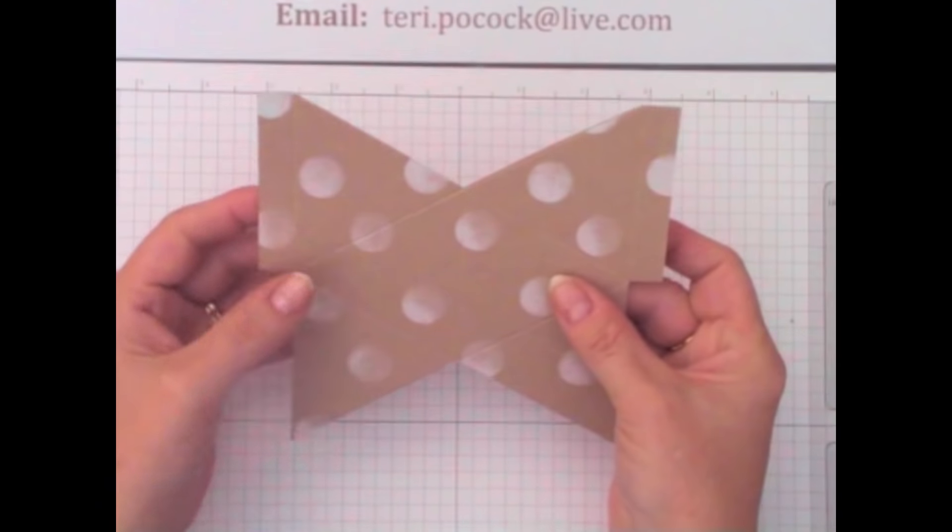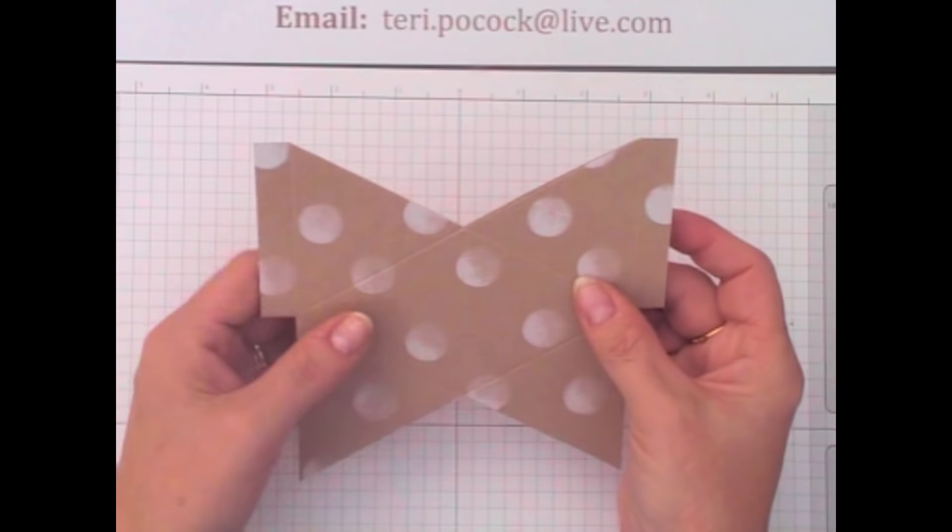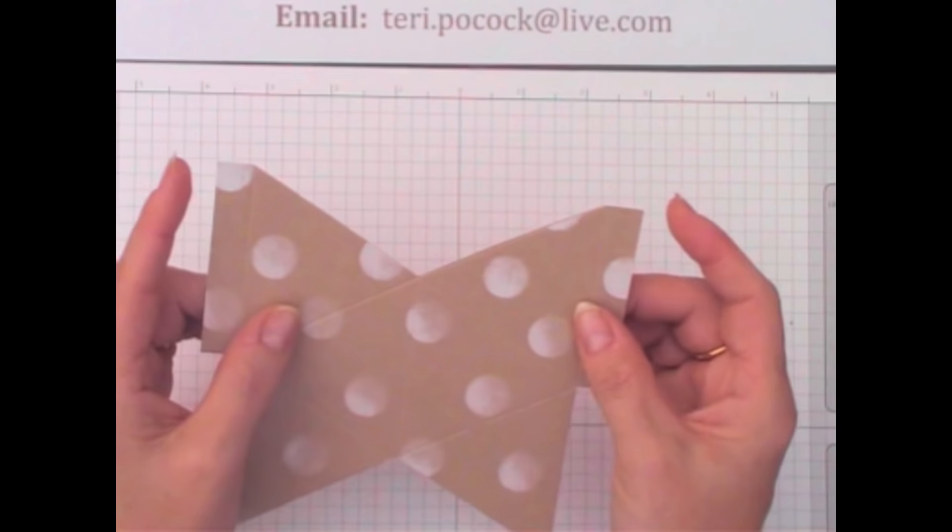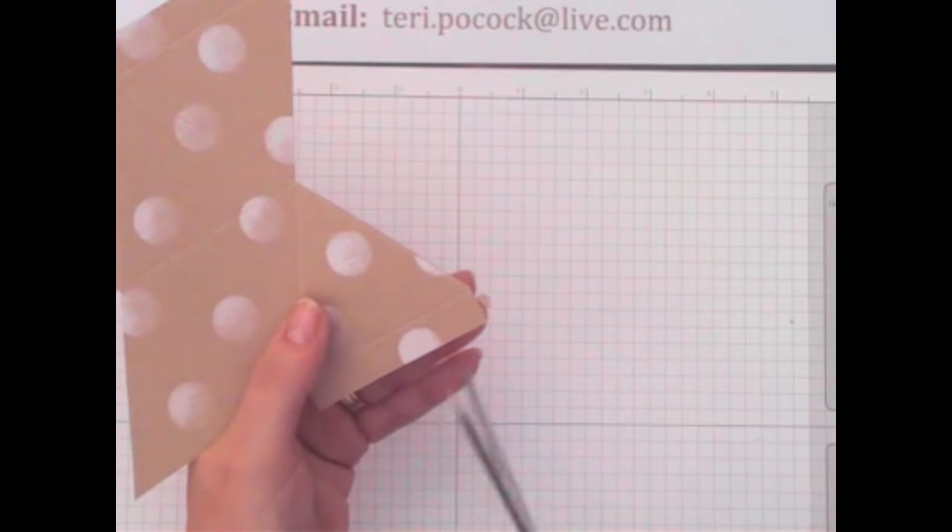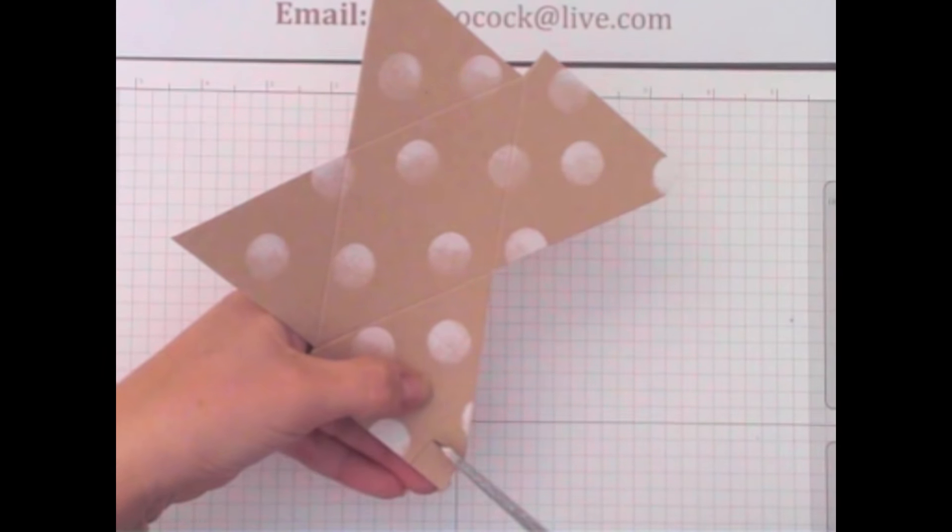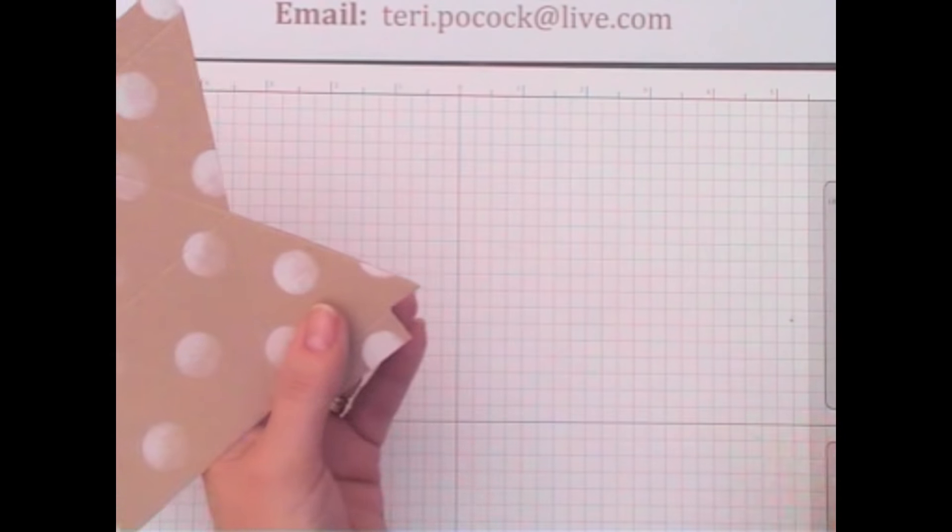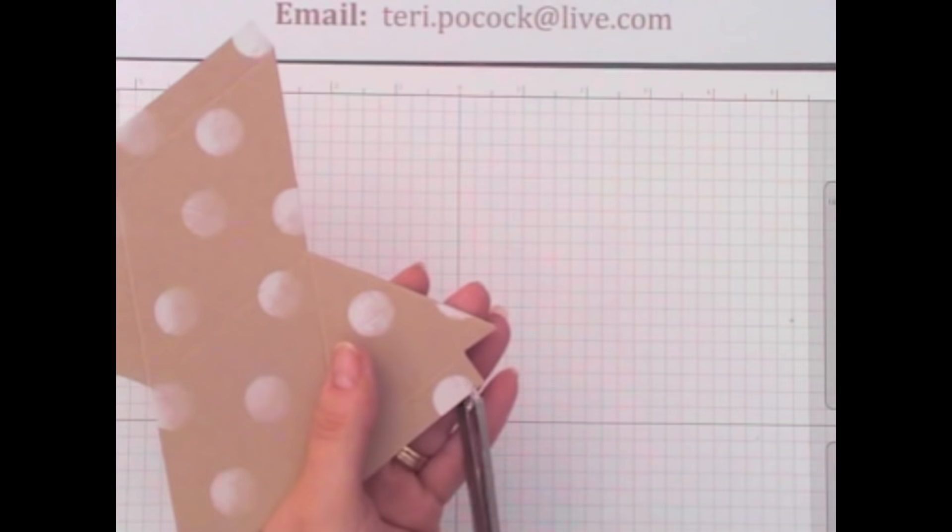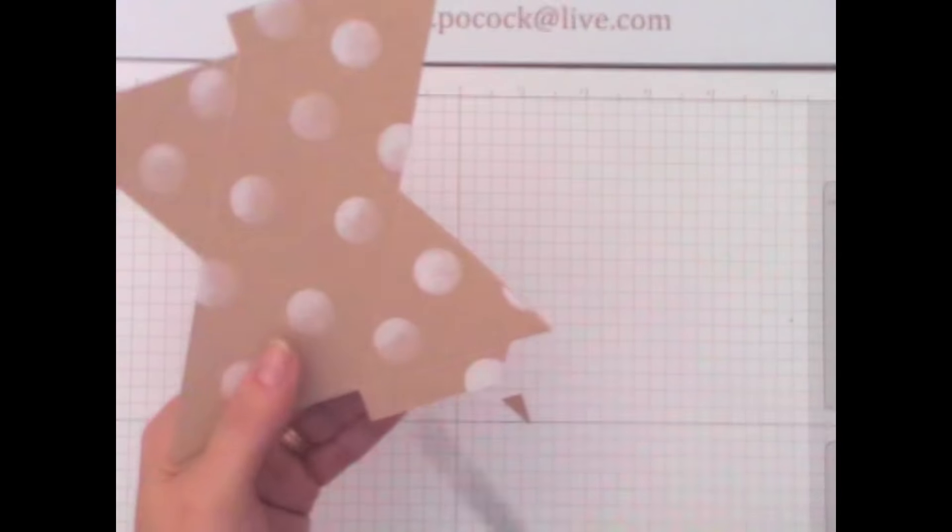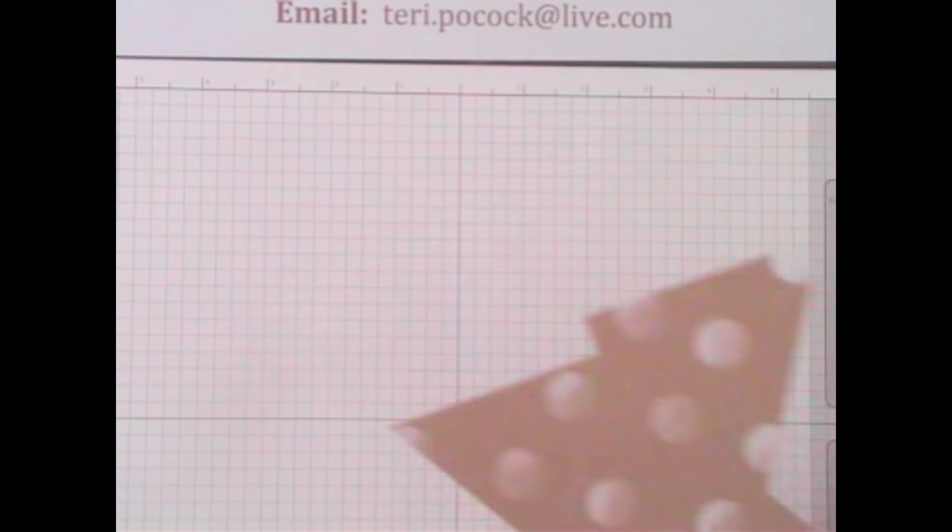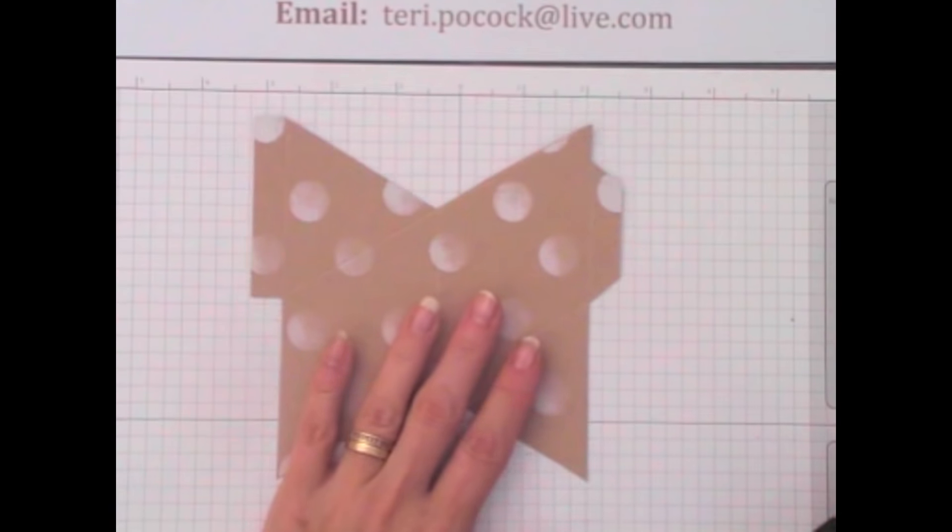Now the next thing we have to do, it doesn't matter which side you do this on, just choose one. I'm going to take it from the right hand side and just take a little piece out of the top of that side tab. Once you've done that, you can notch the sides of that tab. So it looks like that.